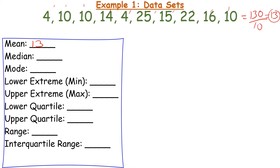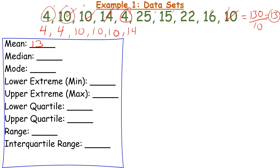Next I find the median. Put the numbers in order from least to greatest. My smallest number is 4, so I start with 4, then another 4. My next highest is 10 — I have three 10s. Then 14, 15, 16, 22, and 25. I have a total of 10 numbers, so I double-check by counting: one through ten. Always double-check to make sure you didn't miss any numbers.